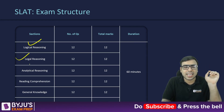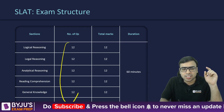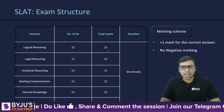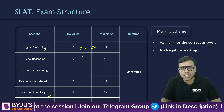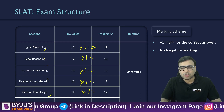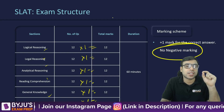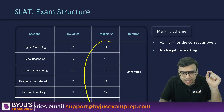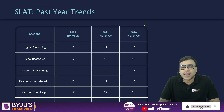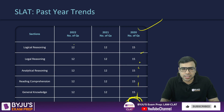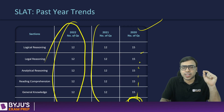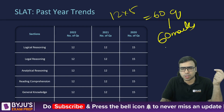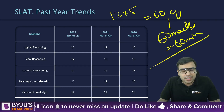The exam structure has five sections: Logical Reasoning, Legal Reasoning, Analytical Reasoning, Reading Comprehension, and General Knowledge. Each section carries 12 questions worth 1 mark each, for a total of 60 questions and 60 marks in 60 minutes. There is no negative marking, so you should attempt all questions. In 2020, each section had 15 questions, but since 2021 it has been reduced to 12 per section.